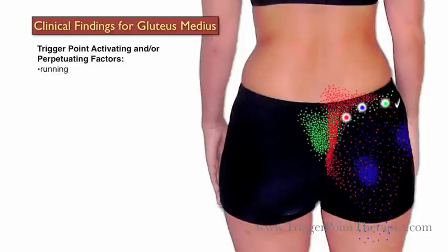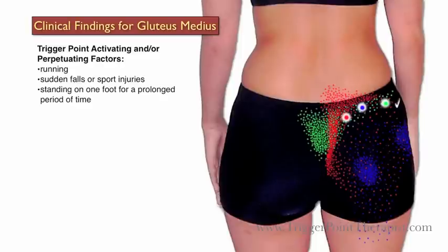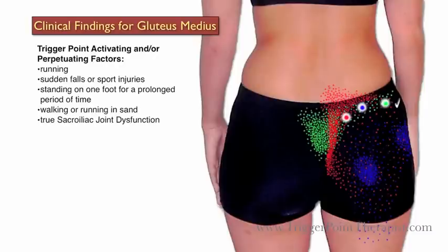Some activating factors for gluteus medius trigger points include running, sudden falls or sports injuries, standing on one foot for a long period of time, walking or running in sand, true SI joint dysfunction, intramuscular injection, and sitting on a wallet.